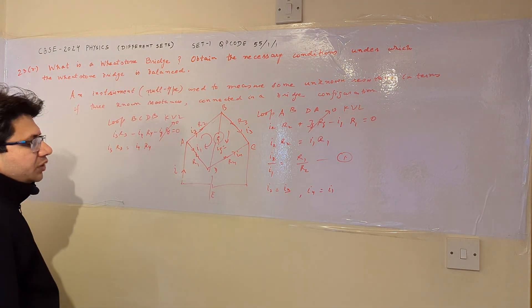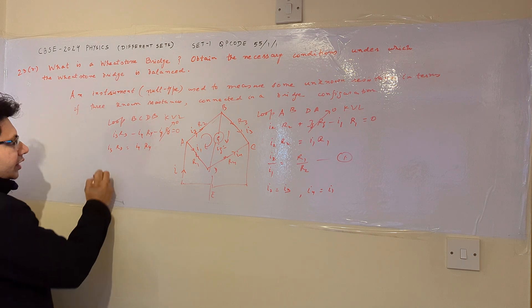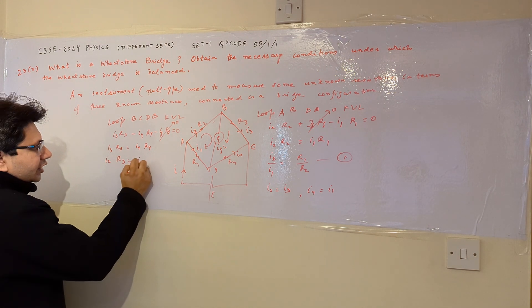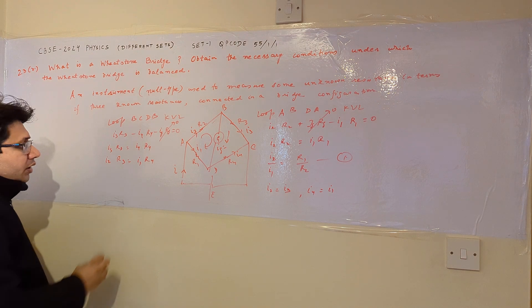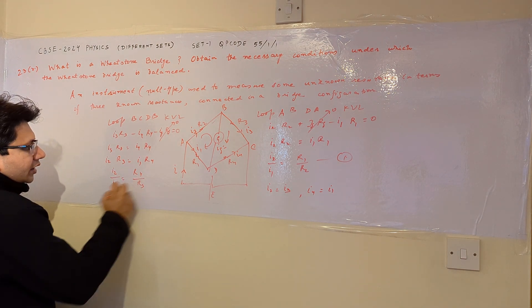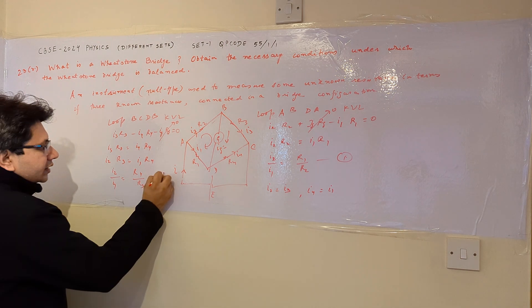So in this way, we can put the value of I3 as I2 and we can put the value of I4 as I1. And we can find out the ratio I2 by I1 is equal to R4 by R3 and call it as equation number 2.